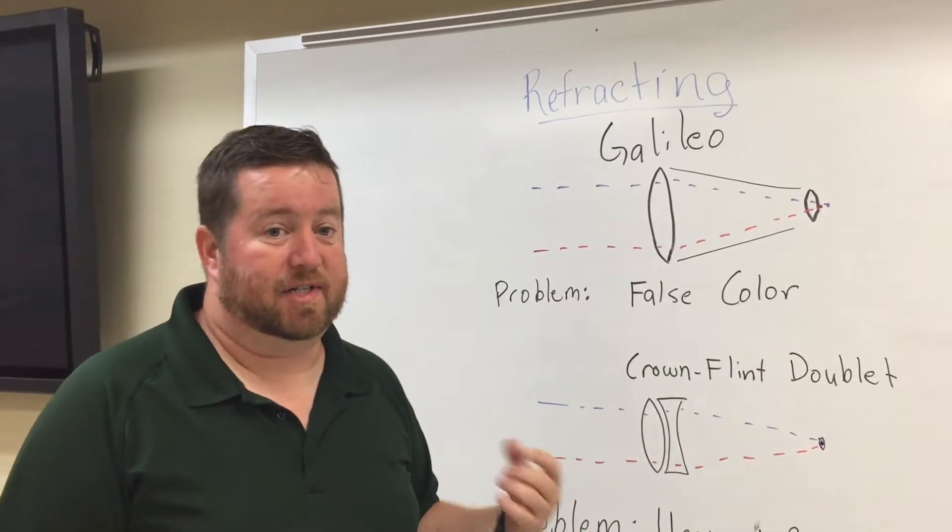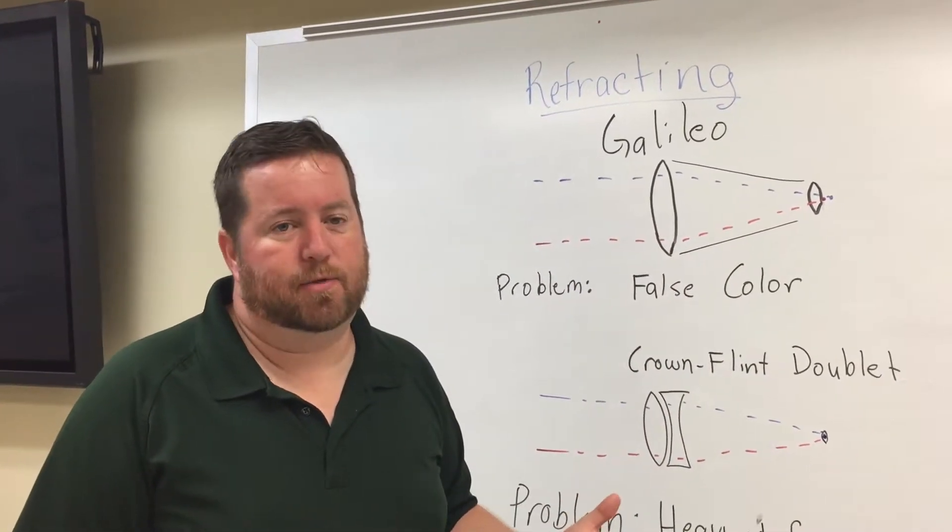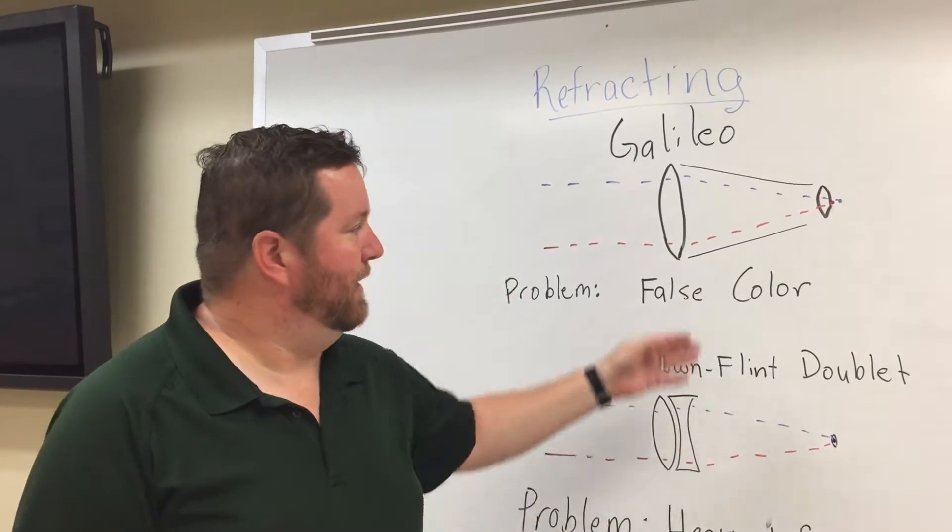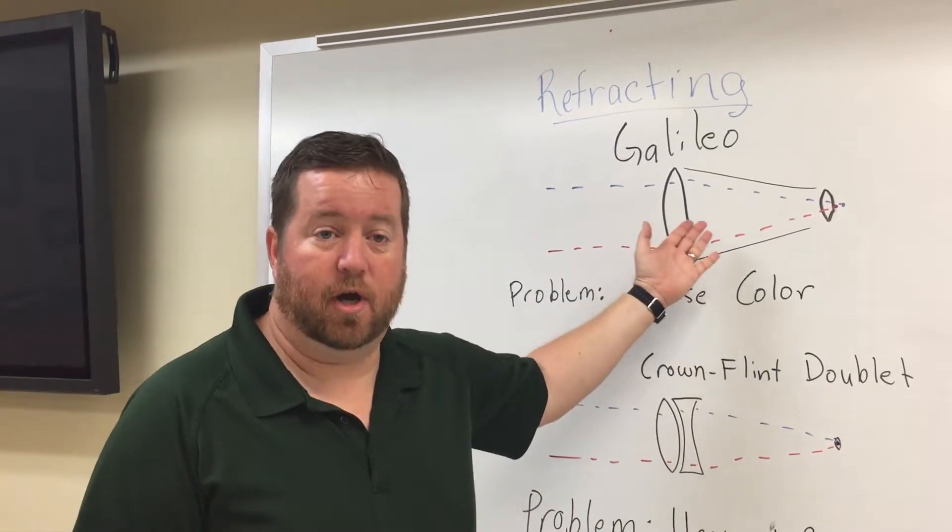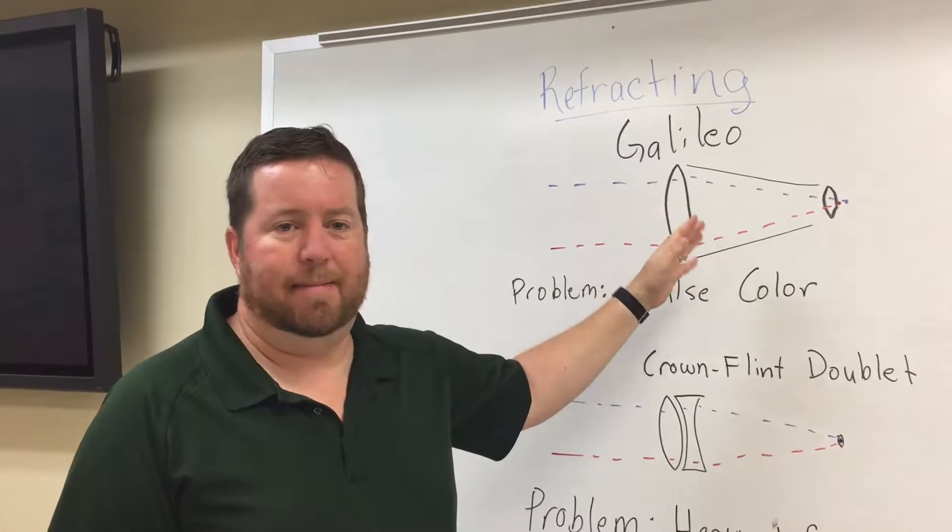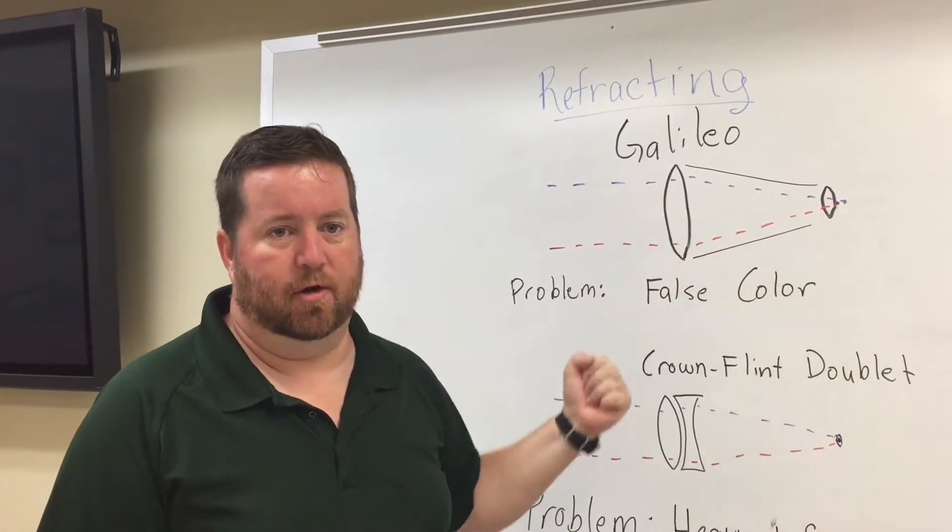Someone even said the sunspots on the sun, maybe those were just birds in flight because they said, well, if we can't trust the color of what you're showing us, maybe there are other problems with looking through your glass. And maybe the heavens really are perfect and only your telescope is imperfect.